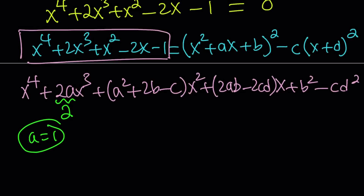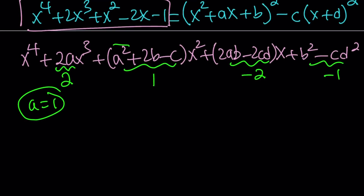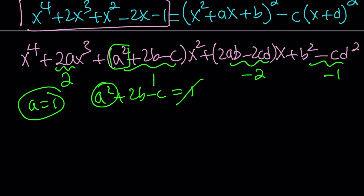Let's look at the other coefficients, including the constant. The coefficient of x squared is positive 1, the coefficient of x is negative 2, and the constant term is negative 1. Since a equals 1, I can plug it in: a squared plus 2b minus c equals 1, but a squared is 1, so those cancel, leaving 2b minus c equals 0, or c equals 2b.